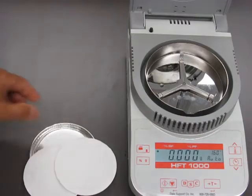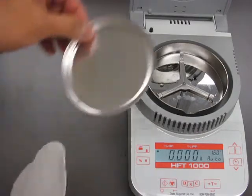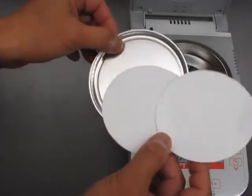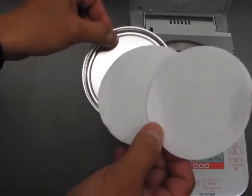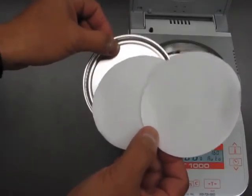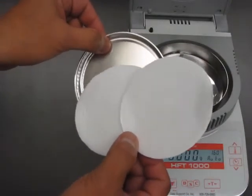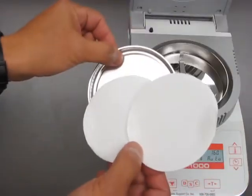The first thing you'll be needing is one aluminum dish and two pads. These should be clean aluminum dish and pads, unused, so every time you're done with the test, you discard them. These are consumables.